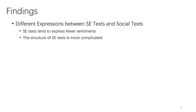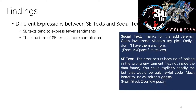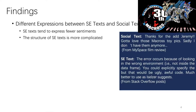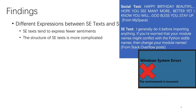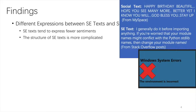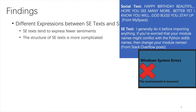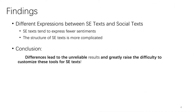First, we find SE texts tend to express fewer sentiments. We will show these features through the following examples. It can be observed that social texts express sentiments directly, whereas SE texts usually have to describe the issues first and then express the author's sentiments. Second, we observed that the structure of SE texts is more complicated. The whole text of the social sample uses an imperative sentence to express blessing. In contrast, the structure of SE texts, which contains subjunctive clauses, is more complicated. Thus, we argued that these differences lead to unreliable results.